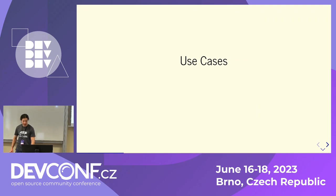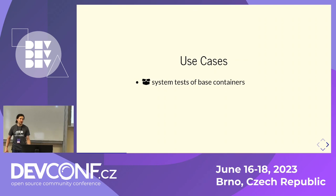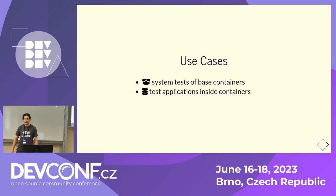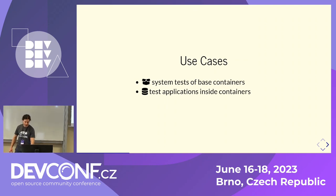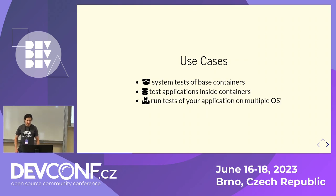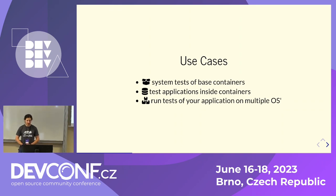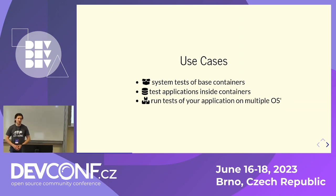So what can you use this for? You can use system tests of your container images if you create operating system container images. You can test applications that you deliver via containers, because just because it's in a container doesn't mean it actually works. Or what I also think is a relatively nice thing — and why we use it in a few places — is that you run a few tests on multiple different operating systems: if you want to run it on Fedora, on OpenSUSE, on CentOS, whatever you like, you can do that.